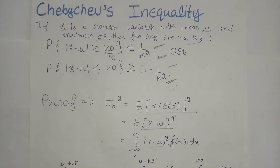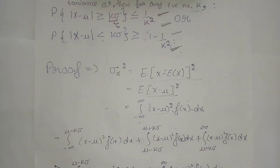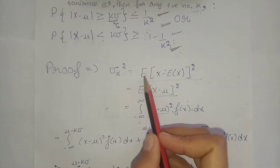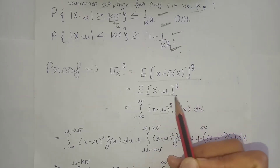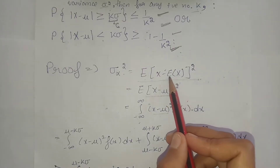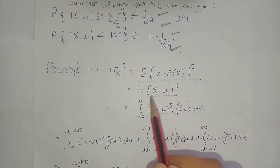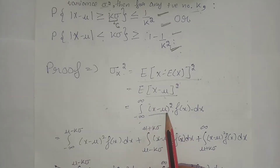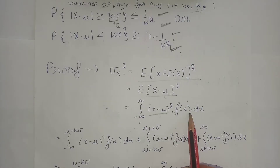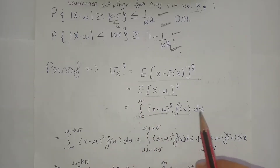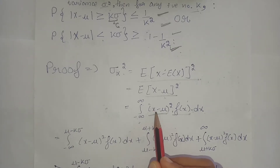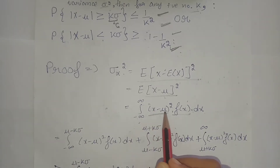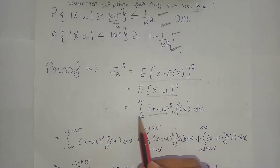We will start the proof using only variance. We call the variance sigma squared, and in terms of expectation its key value is defined as shown. Our random variable x has mean mu, and we call the mean the expectation of x. The definition of expectation involves the probability density function of x integrated over all values, that is from minus infinity to infinity with respect to dx.